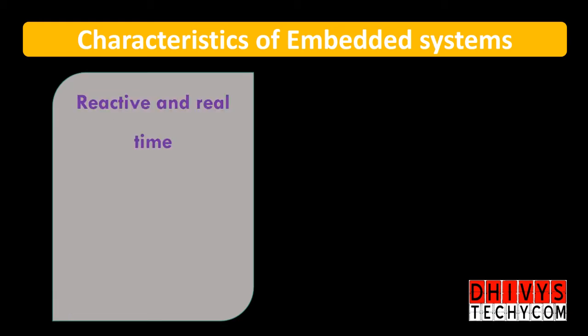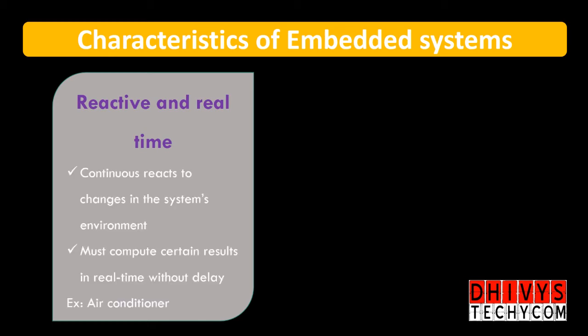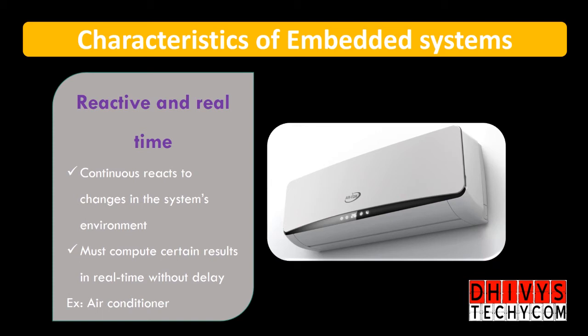The third part is reactive and real time. Reactive and real time is becoming a very common thing these days because we have different types of devices available in the market. Reactive and real time means the system continuously reacts to changes in the system's environment. For example, with an AC, if you have a cold or hot temperature, the system responds accordingly.